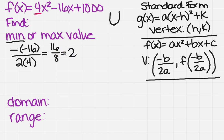Now, I need to find f of that value. So that means that's going to be my y value, so this is x. So then y is going to equal 4 times 2 squared minus 16 times 2 plus 1,000.